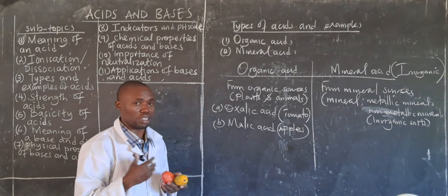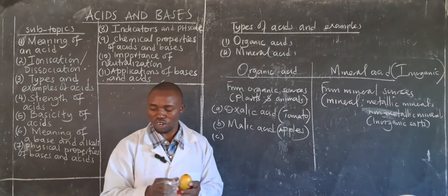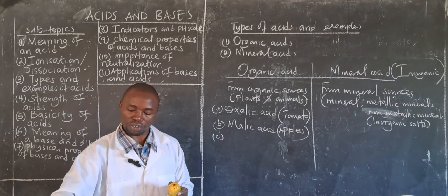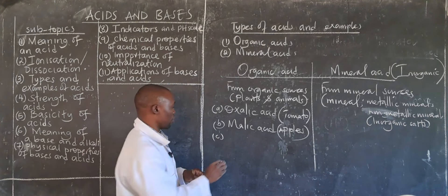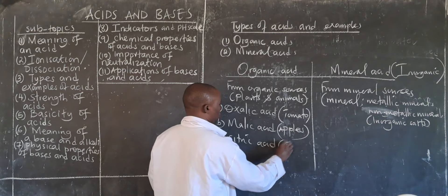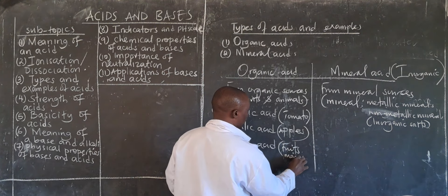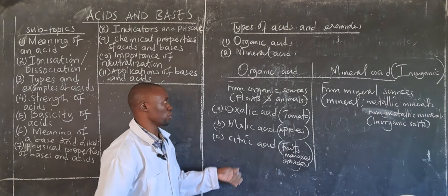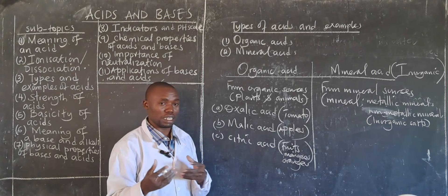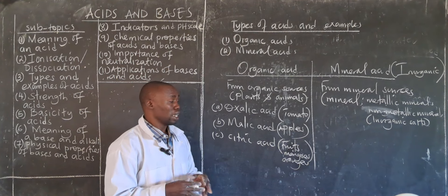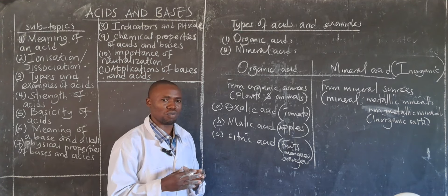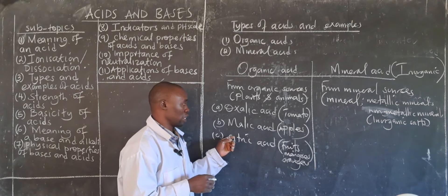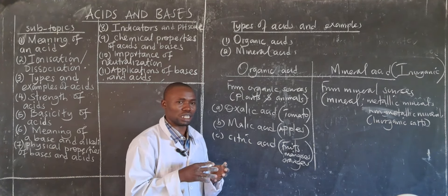Lactic acid is found in milk. Citric fruits such as mangoes, oranges, and lemons contain citric acid. There are many organic acids occurring in different fruits. Many of these organic acids have complex molecular formulas that require more advanced chemistry to study.